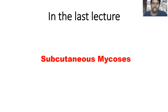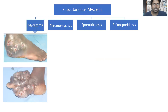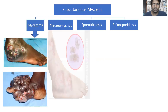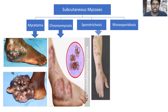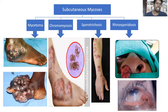In the last lecture, we discussed about subcutaneous mycosis. In subcutaneous mycosis, we have 4 types of fungal infections: Mycetoma, Chromomycosis, Sporotricosis, and Venosporodeosis. We discussed in detail about Chromomycosis, Sporotricosis, and Venosporodeosis. The only thing left in subcutaneous mycosis is Mycetoma.